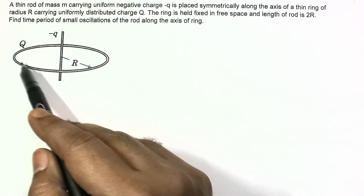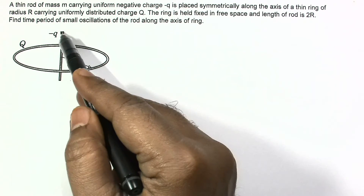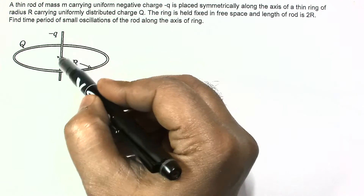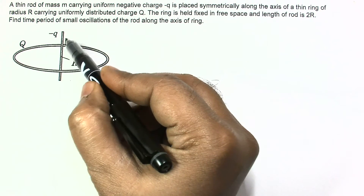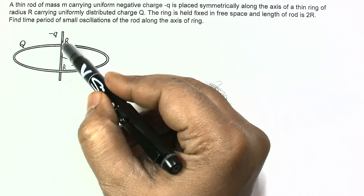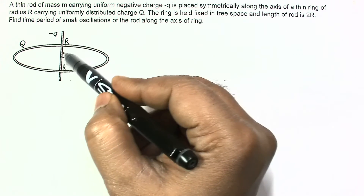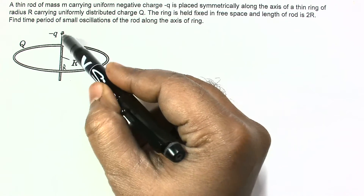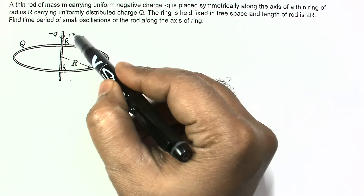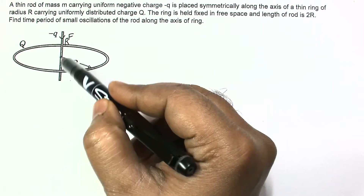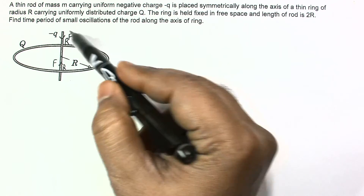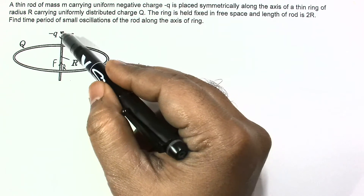The rod is placed along the axis of the ring and its length is 2r. The placement is symmetrical, meaning the center of the rod is at the center of the ring, with r distance above and r distance below. Because the charge is uniformly distributed and the arrangement is symmetric, the attractive forces on the upper and lower parts cancel out, giving net force zero — the rod is in equilibrium.